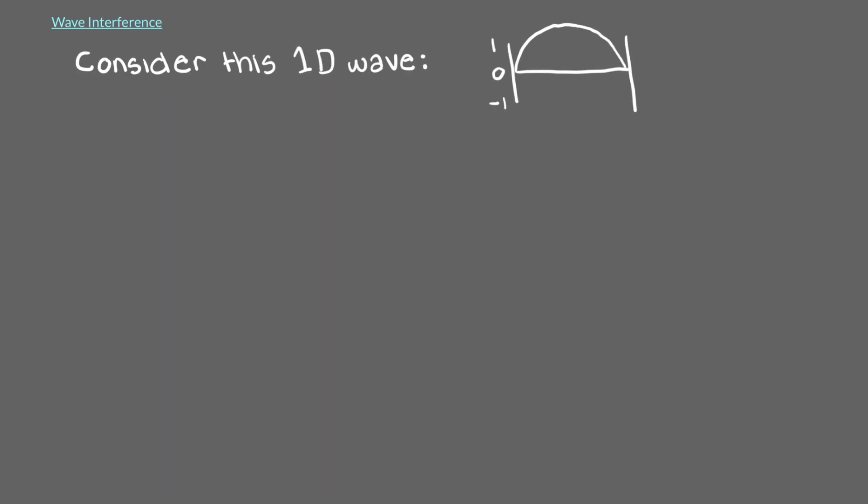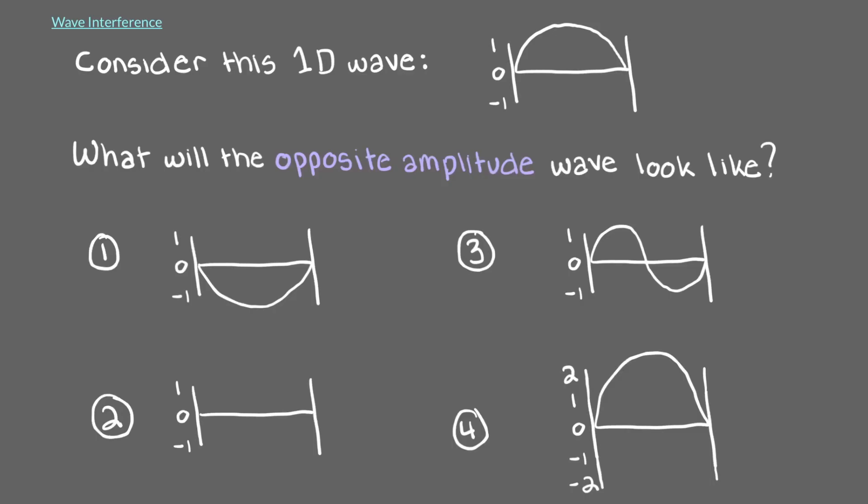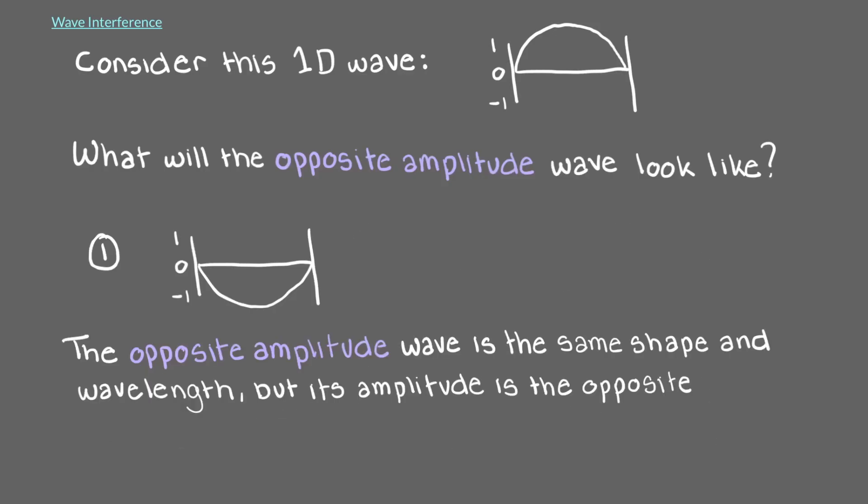Consider this one-dimensional wave. What will the opposite amplitude wave look like? The opposite amplitude wave is the same shape in wavelength, but its amplitude is the opposite. For example, the amplitude is plus 1 here on the first wave. On the other wave, the same spot has an amplitude of minus 1.